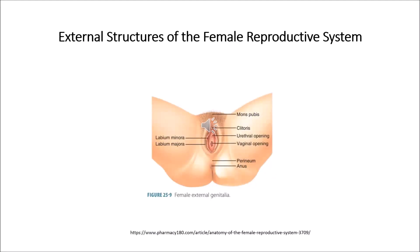Now let us move to the content of the video. What parts make up the female anatomy? The female reproductive anatomy includes both external and internal structures. The function of the external female reproductive structure is to enable sperm to enter the body and to protect the internal genital organs from infectious organisms.